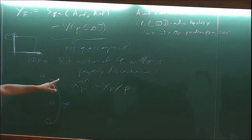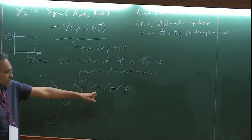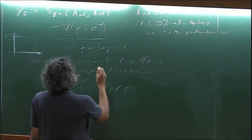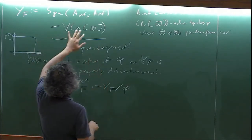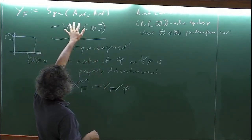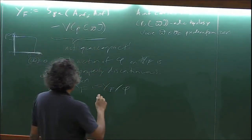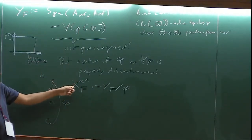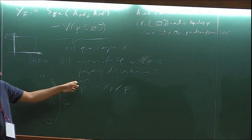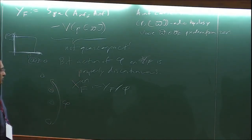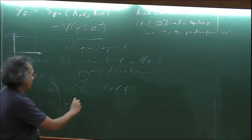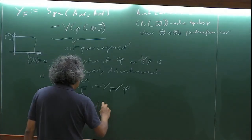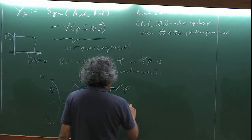If the action is properly discontinuous, then I can take the quotient, and this will be an adic space — at least set-theoretically a well-defined topological space. This is the thing that's eventually going to become the adic Fargues-Fontaine curve associated to F.